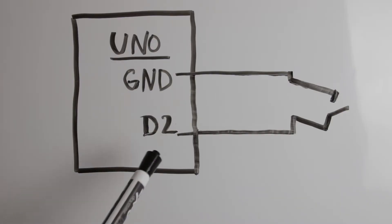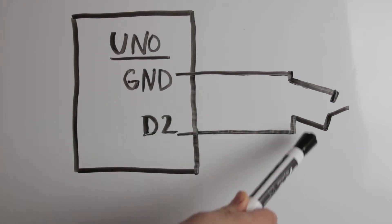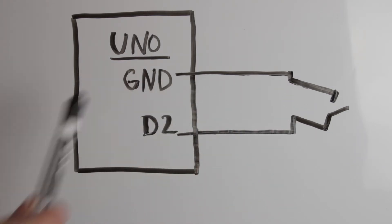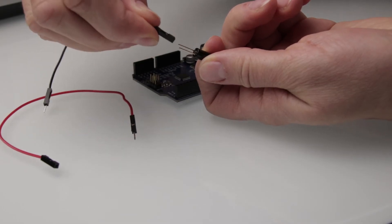This is the schematic for the tilt ball switch. Pin D2 will connect to one lead of the tilt ball switch. The other lead will connect to the ground. Let's do the wiring now.